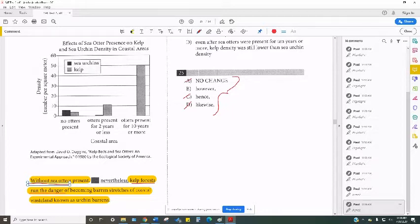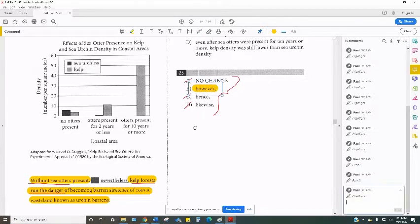The correct answer here is however. However, this is the most common answer choice that shows contrast. So if you see difference in the sentences, then however may be the first one you consider. If you see similarity in the sentences, it's likely to be the first one that you eliminate.